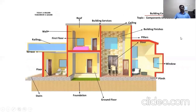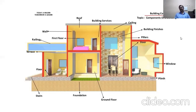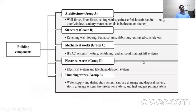This picture gives you a basic idea about the components of a building. A building has different components: plinth, staircase, ground floor, windows, doors, pillars, first floor, wall, roof, ceiling, etc. These are the building components.